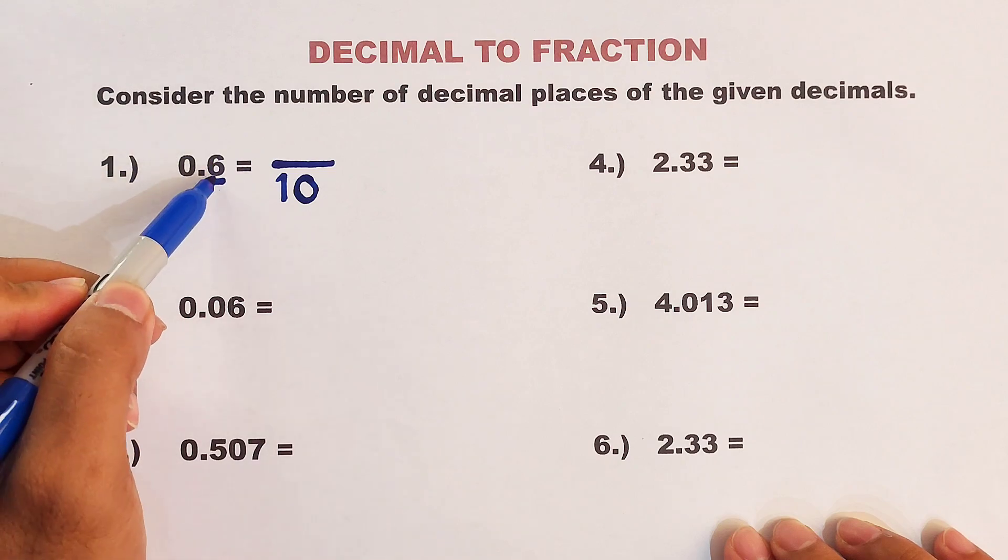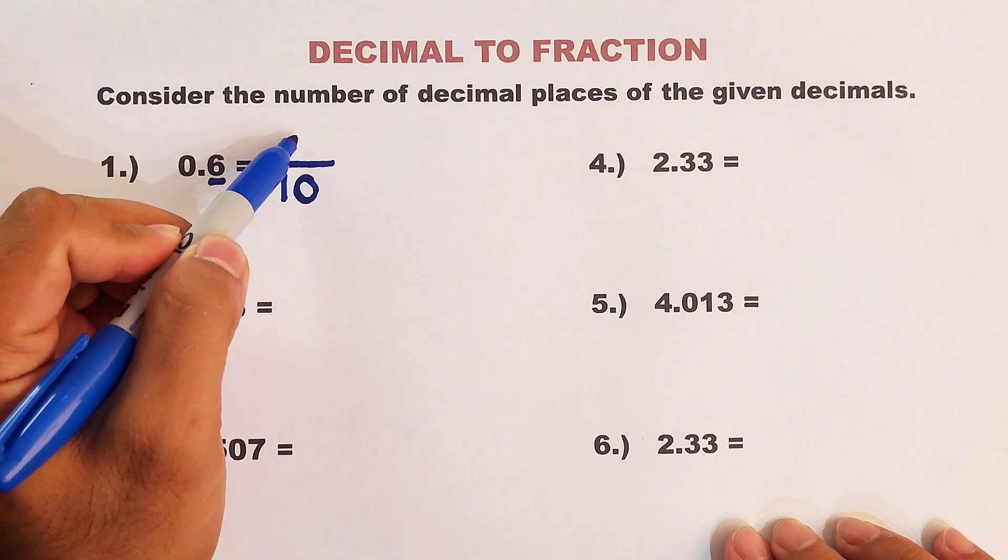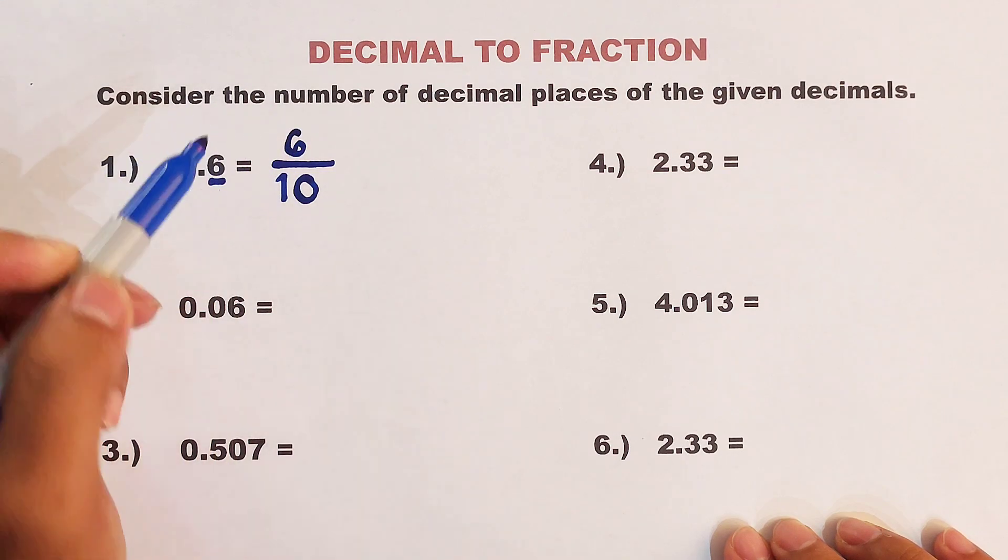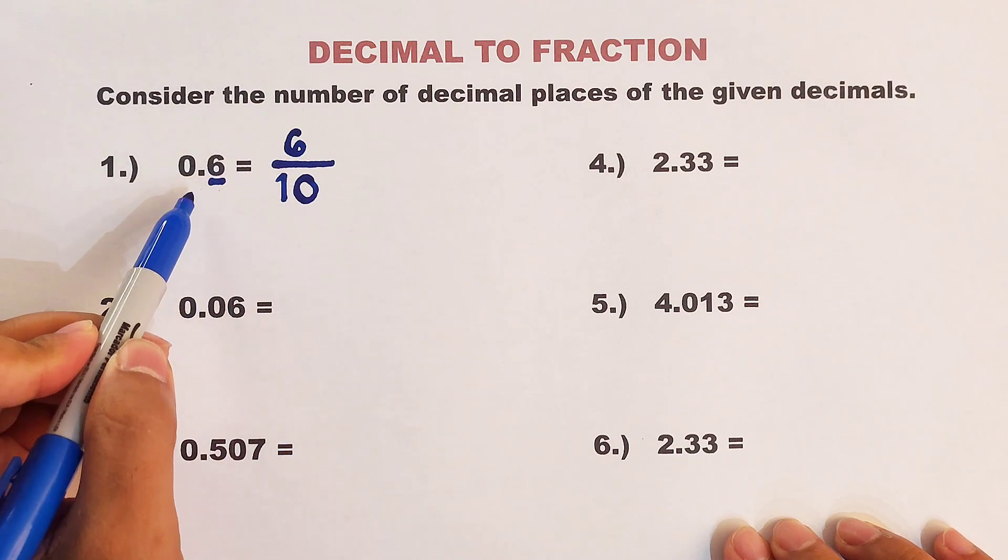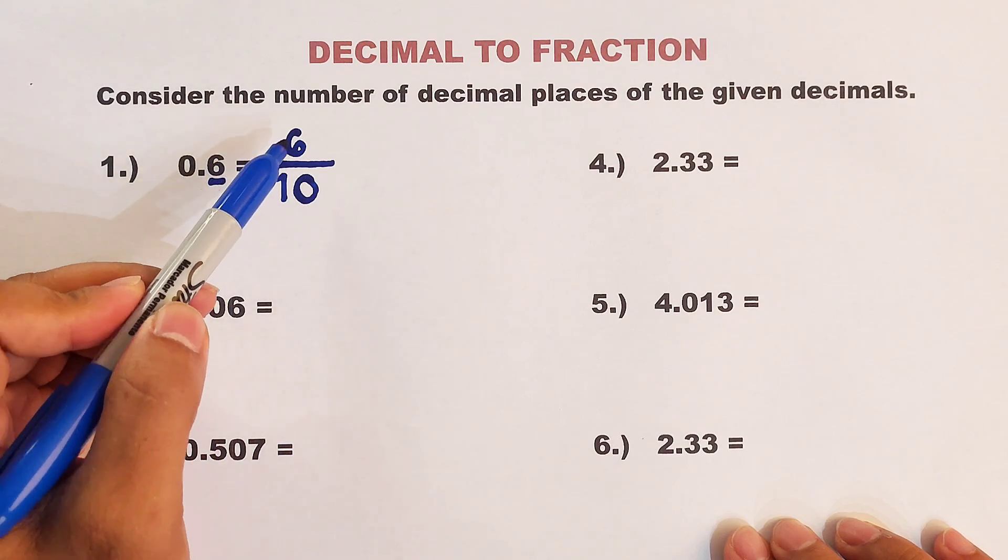And after that, we will copy this number. We have 6, meaning the equivalent fraction of this decimal 0.6 is simply 6 over 10.